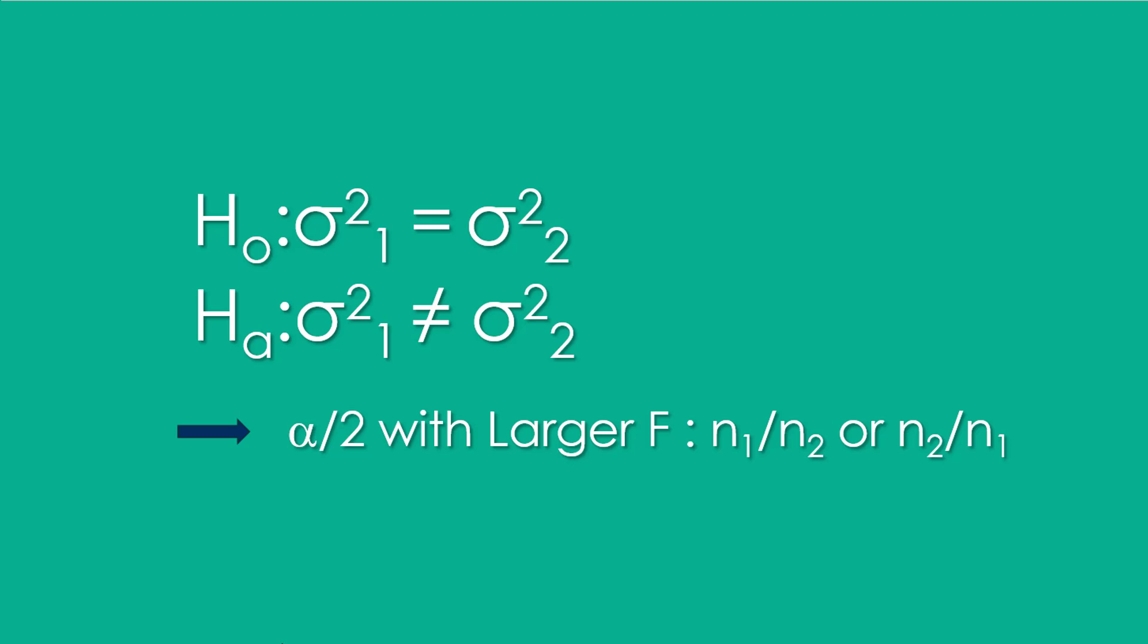But in this problem we do not know which sample has the larger variance. We then must find F twice. Once with the degrees of freedom of the first sample as the numerator and the degrees of freedom of the second sample as the denominator. Then we find F again with the degrees of freedom of the second sample as a numerator and the degrees of freedom of the first sample as the denominator. Because we want the rejection error to be as small as possible, we choose the larger value for the critical value of F.